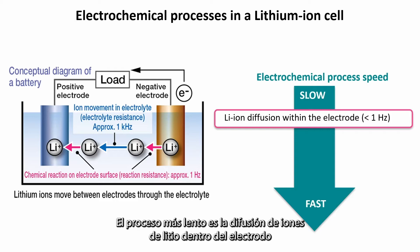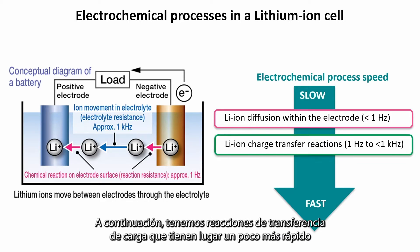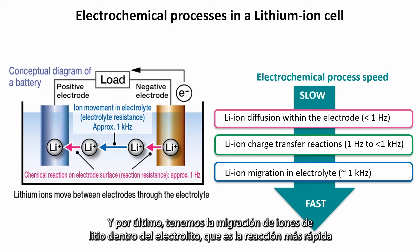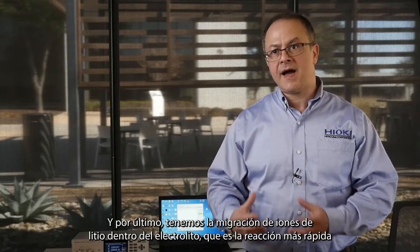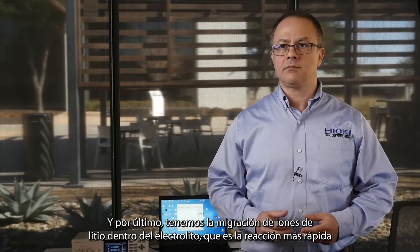The slowest process is the lithium ion diffusion within the electrode. Next we have charge transfer reactions which take place a little bit faster, and finally we have the lithium ion migration within the electrolyte, which is the fastest reaction.